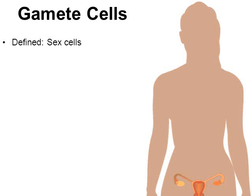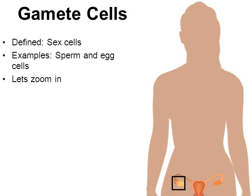We're going to look at a woman in this example, but keep in mind that men also have sex cells. In our picture, we have a woman's reproductive system and we're going to focus on her ovaries. Gametes are sperm cells and egg cells. We're going to zoom on in to female gametes. Men's sperm cells are housed inside the testes. Let's zoom on in to a female ovary right now.